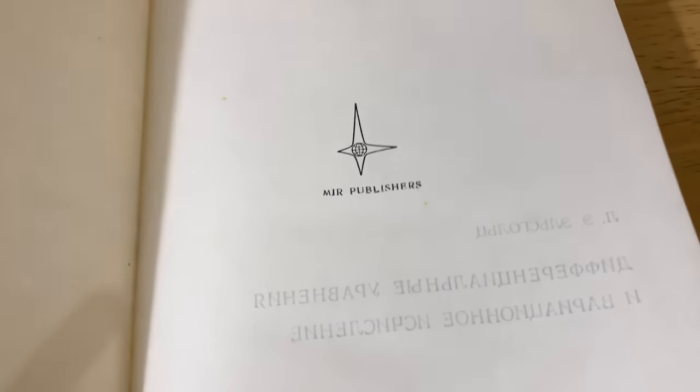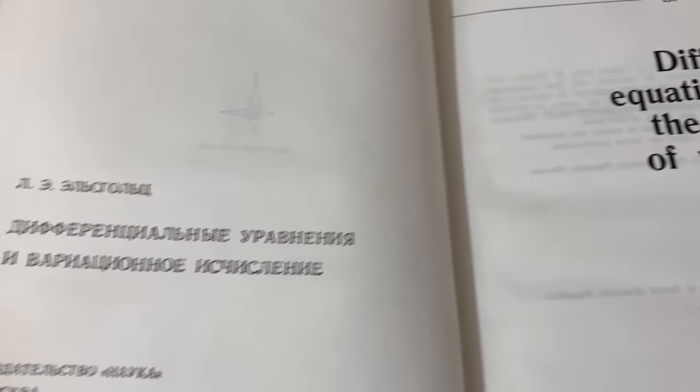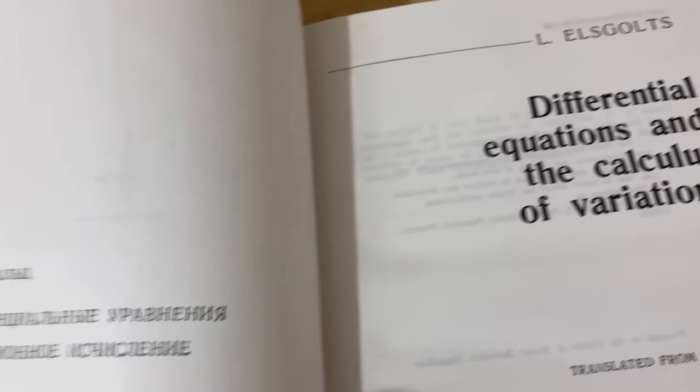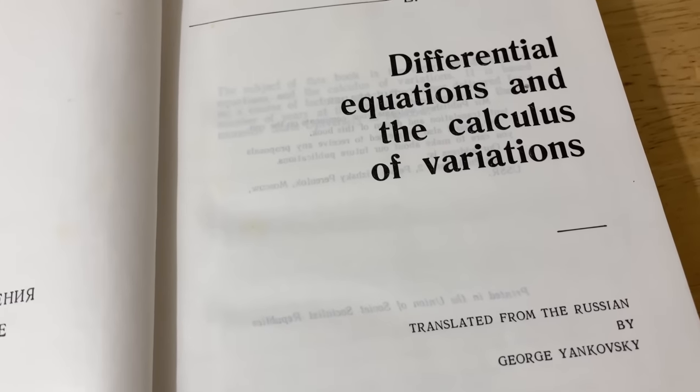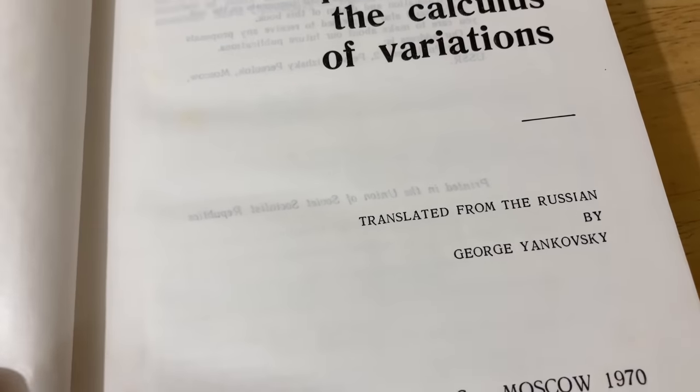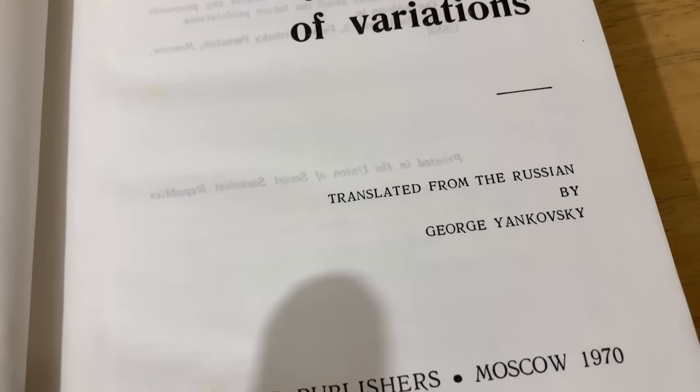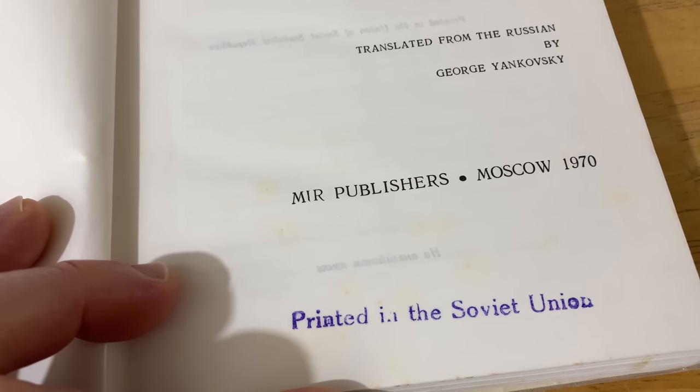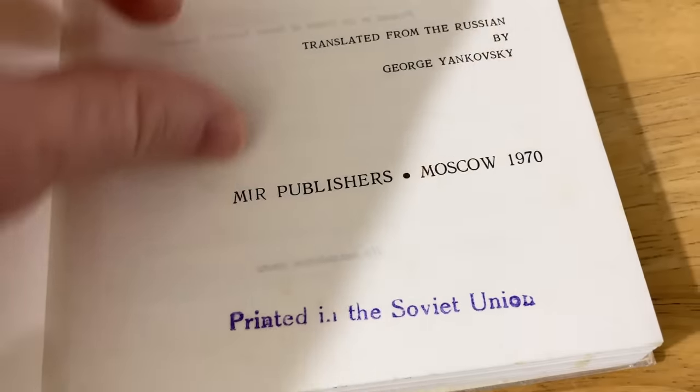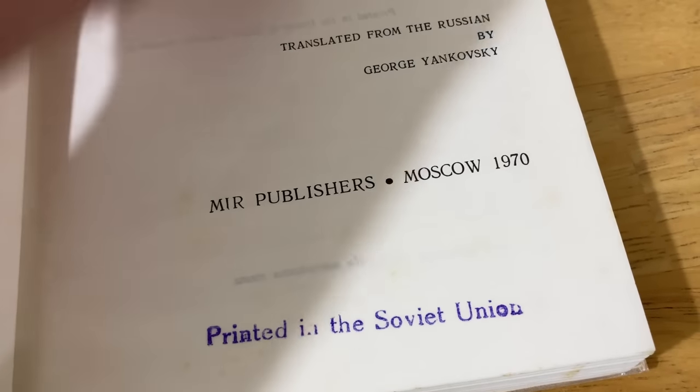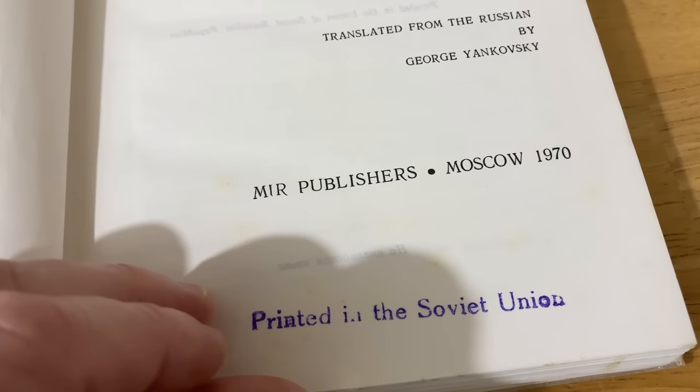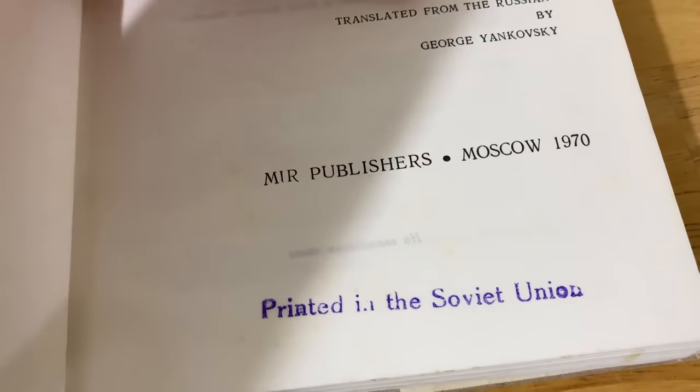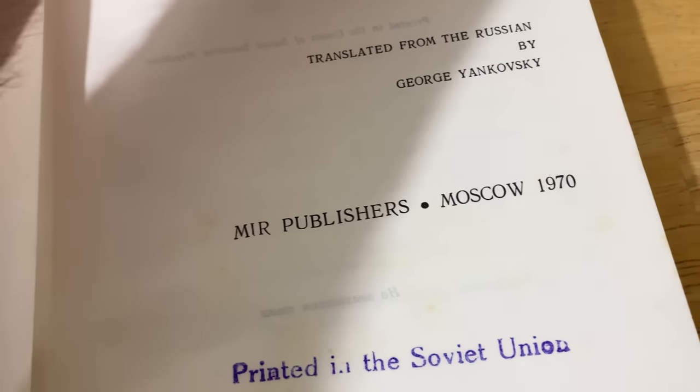Let's just carefully open this. Mir Publishers. Differential equations and the calculus of variations, translated from the Russian by George Yankovsky. Printed in the Soviet Union. It's like a stamp, it looks like it's been stamped, which is really interesting. I have other books by Mir Publishers now, a few, not many, and they don't have that stamp. So that's really interesting that this one was actually stamped.